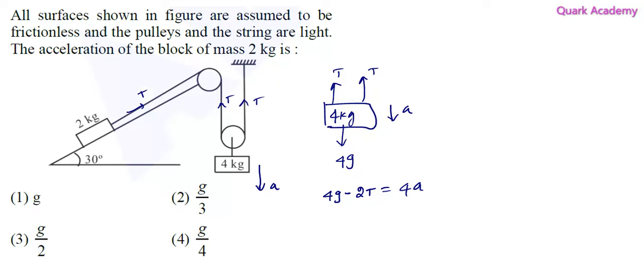If it has to move x distance, then this pulley has to move x distance, which means both sides of the strings have to move x distance. If both sides have to move x distance, then this 2 kg mass should have moved 2x distance. This one you have to visualize carefully.